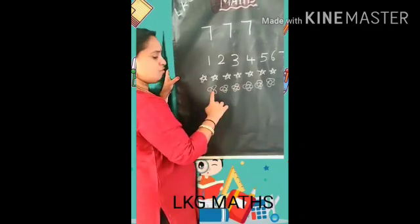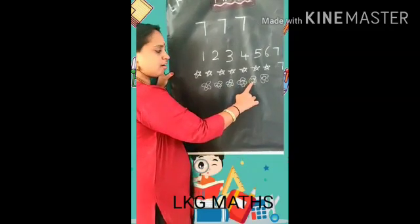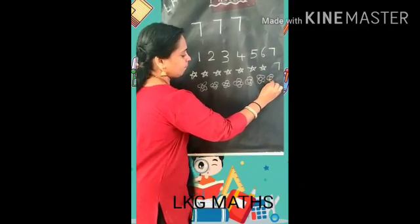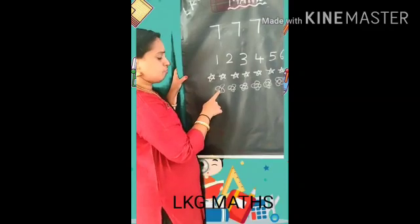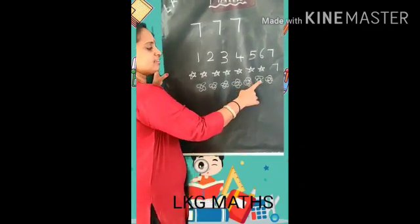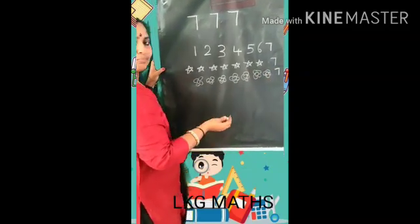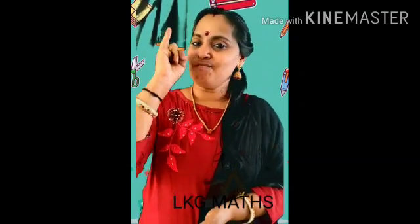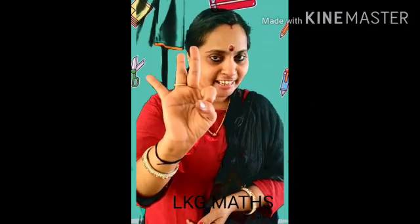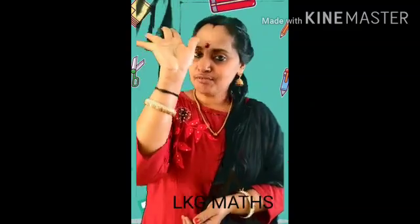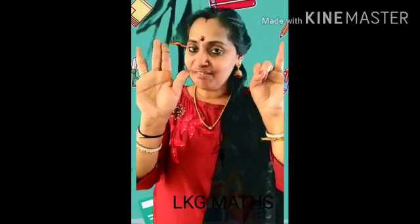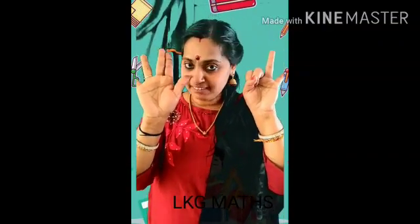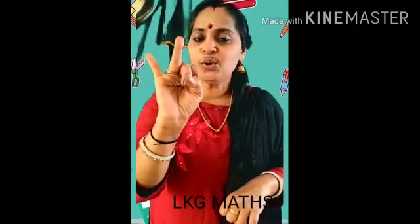How many flowers are there? Ready? 1, after 2, after 3, after 4, after 5, after 6, after 7. Is it clear? 1, after 2, after 3, after 4, after 5, after 6, after 7.